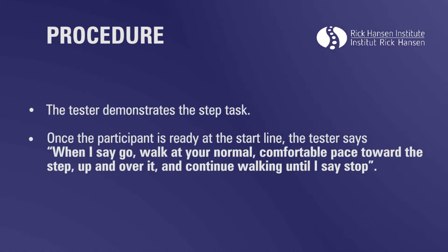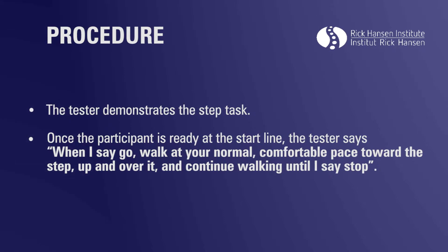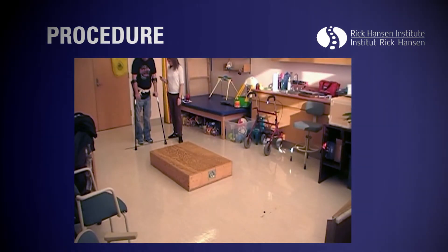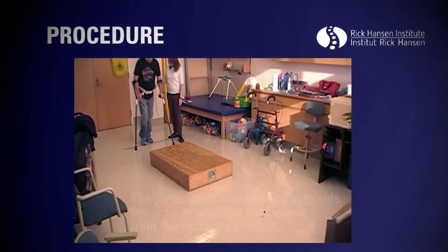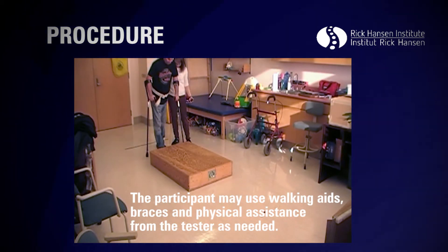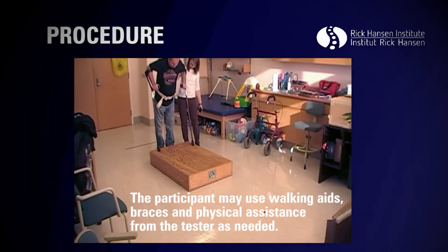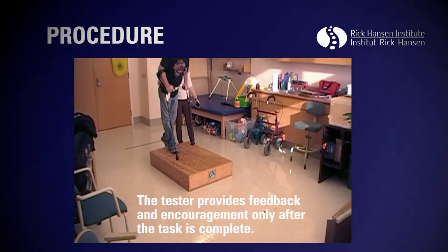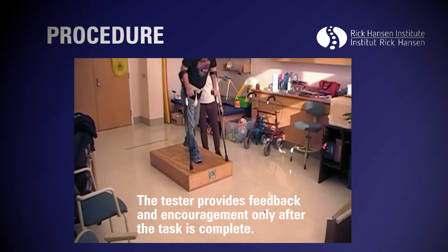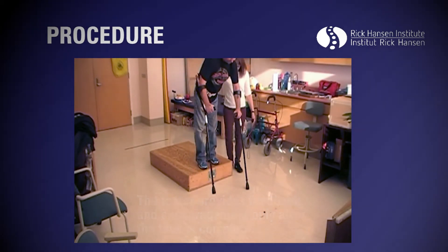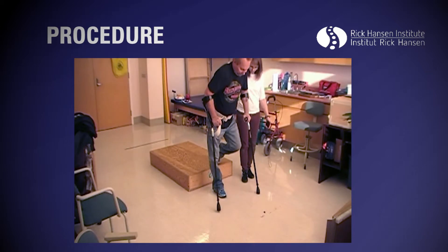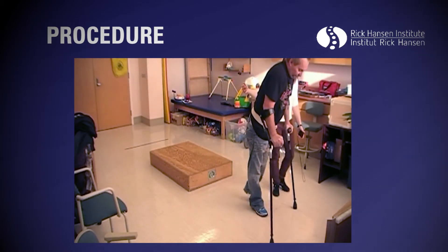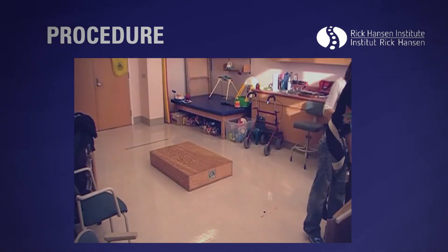The tester demonstrates the step task once. When the participant is ready at the start line, the tester says: 'When I say go, walk at your normal comfortable pace toward the step, up and over it, and continue walking until I say stop.' The tester says 'go' and begins timing. The tester stops timing once both of the participant's feet have crossed the end line, then instructs the participant to stop. The tester records the time and assistance rating.